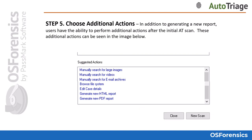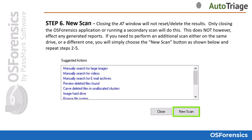Once the scan is complete, you will be presented with secondary scan options to choose from to perform additional analysis on the target system. Should you need to go back and perform a new scan on the system, you can simply click on the New Scan button.